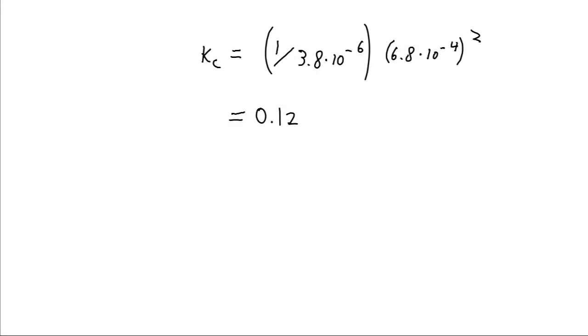And then finally, we just have to multiply the equilibrium constants for those two steps. And when we multiply those out, we get 0.12 as our equilibrium constant for the overall reaction.